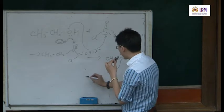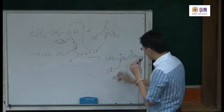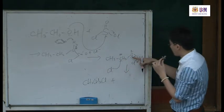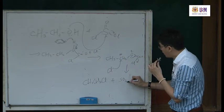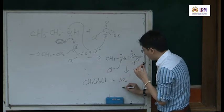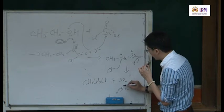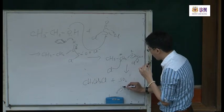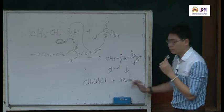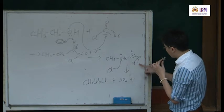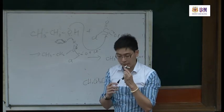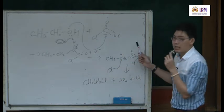And this bond breaks. Last week your friend didn't show this step. After the bond breaks, this group comes out. What you get now is CH₃CH₂Cl, plus this becomes SO₂ — this O forms a double bond — plus Cl⁻, which is regenerated as the nucleophile for further reaction. So this is the correct mechanism.